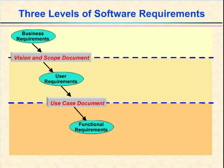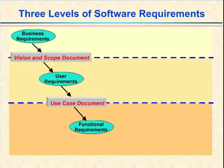To reiterate: business requirements are a kind of 'why' information — why are we undertaking this project? User requirements are a kind of 'what' information — what will the user be able to do with the product? And you probably think I'm going to say 'how,' but you would be wrong. Functional requirements are another kind of 'what' information: what does the developer build? I like to collect the functional requirements along with a lot of other information in a software requirements specification, or SRS. So these three documents — vision and scope, use cases, and software requirements specification — are the three containers for different kinds of requirements information.